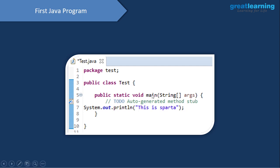Inside the class, we have the main function. Before 'main' you have 'void', which is the return type of this function — void means it isn't returning anything. We also have 'public static': public means it's a public function, and static means it can be accessed without an object. Normally, if you don't add static before a function, you'd need an object to invoke it.